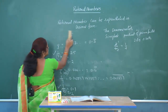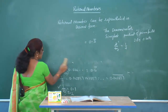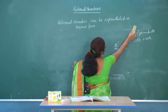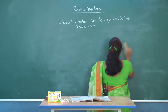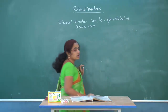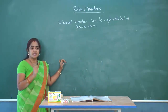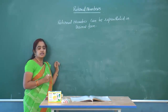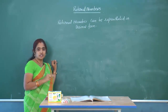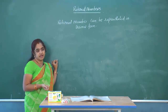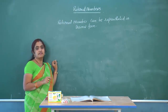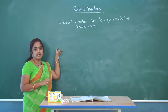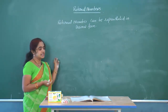So a rational number can be represented in decimal form as either terminating or non-terminating. Without doing actual division, we check the denominator in simplest form: if prime factors are only 2 or 5, it is a terminating decimal; otherwise it is a non-terminating recurring decimal.